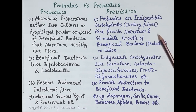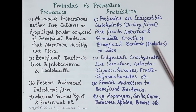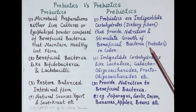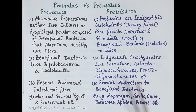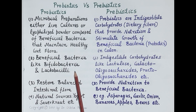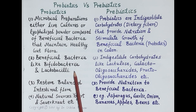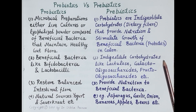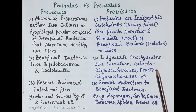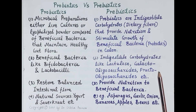These dietary fibers provide nutrition and stimulate the growth of beneficial bacteria in the colon. Examples of beneficial bacteria include Bifidobacteria and Lactobacilli. Examples of prebiotics include lactulose, galactooligosaccharides, and fructooligosaccharides.